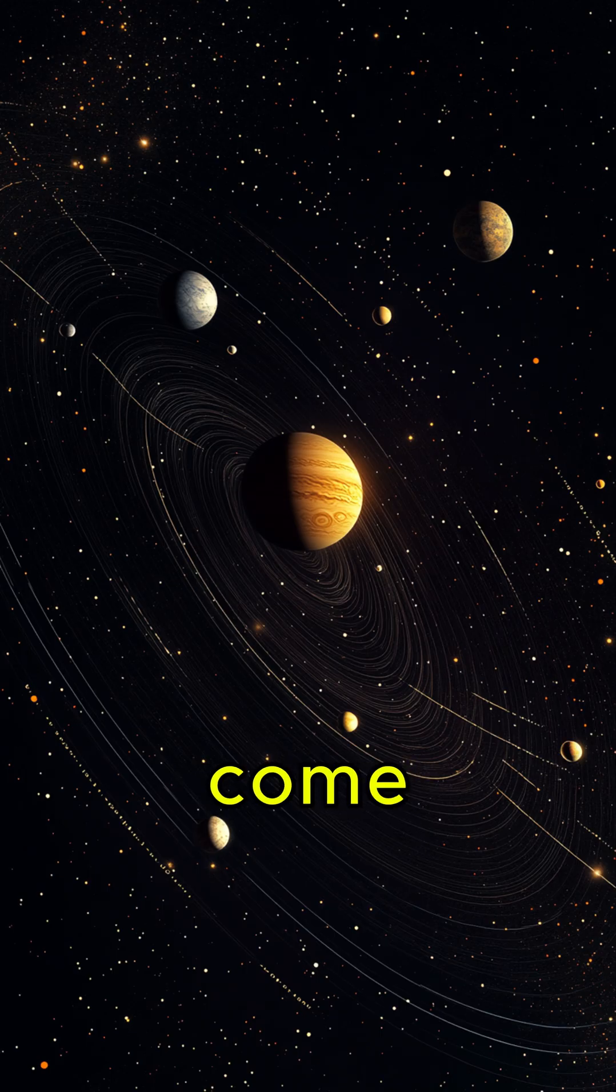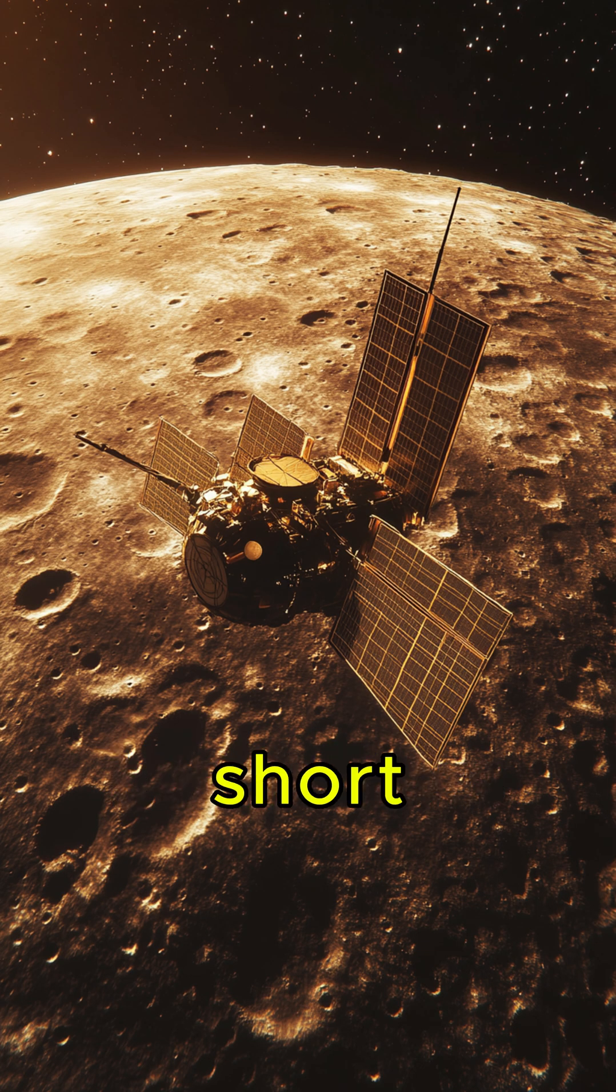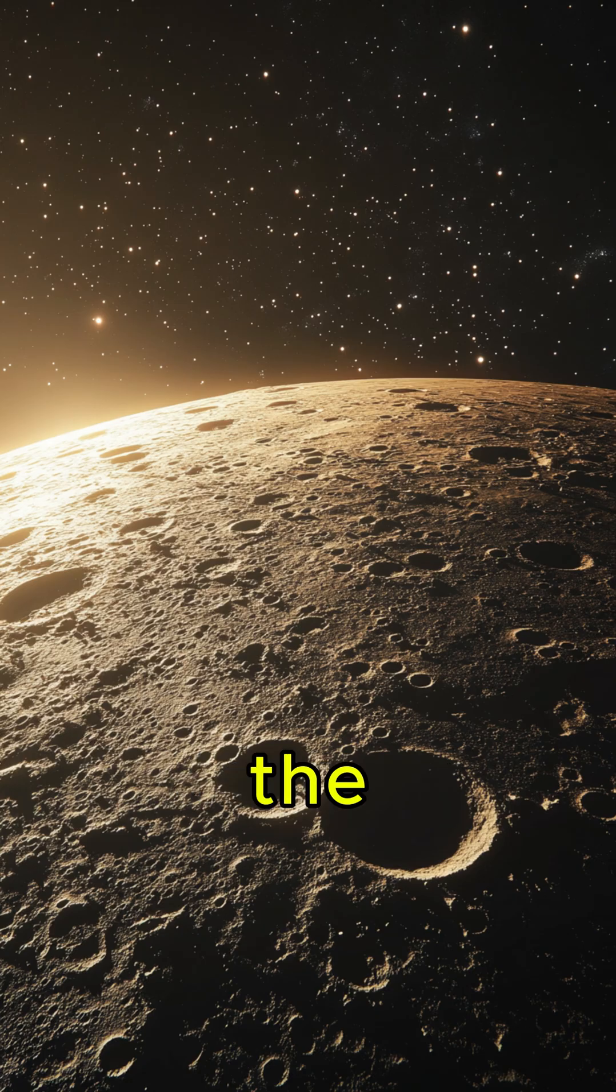So Venus can come as close as 40 million kilometers to Earth for a short time, but Mercury is the planet that stays closest to Earth on average over time.